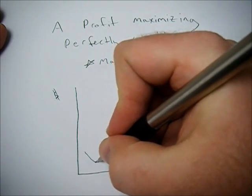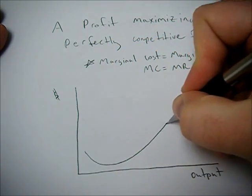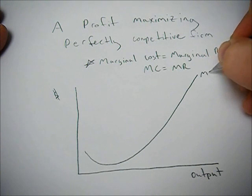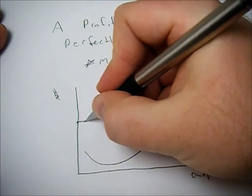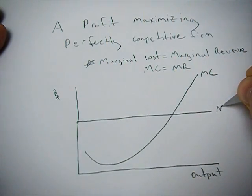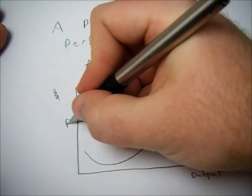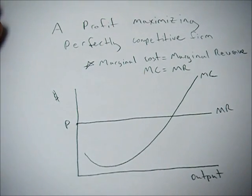We have our marginal cost that slopes down at first and then slopes up as we have that diminishing productivity. And then we have our flat marginal revenue line, which is determined by the outside market, supply and demand.